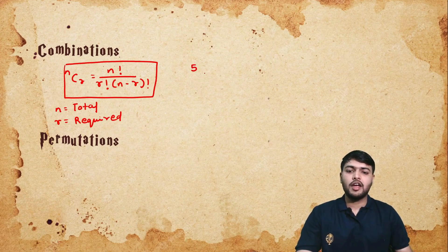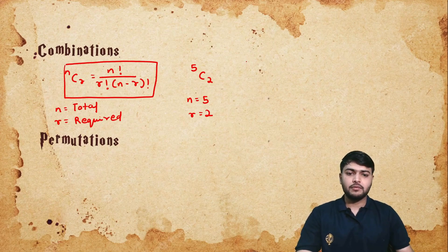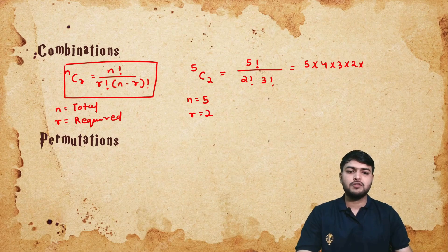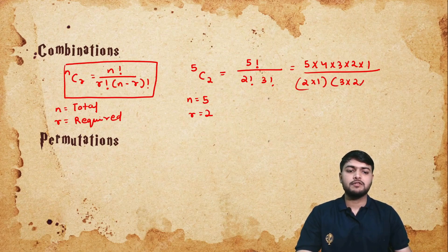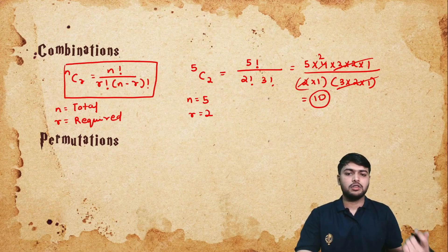If you are asked the value of 5C2, here n is 5 and r is 2. Substituting into the formula: 5 factorial upon 2 factorial times 3 factorial. 5 factorial is 5 × 4 × 3 × 2 × 1, 2 factorial is 2 × 1, and 3 factorial is 3 × 2 × 1. After cancellation, 2 × 2 = 4 and 5 × 2 = 10. The value of 5C2 is 10.